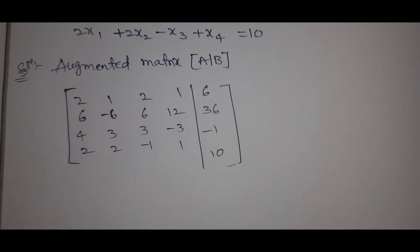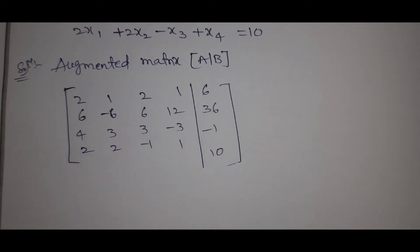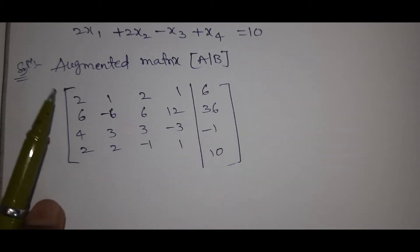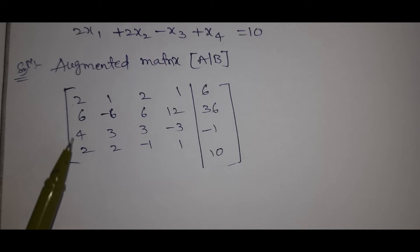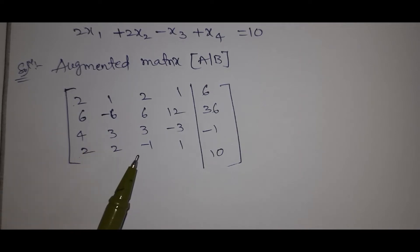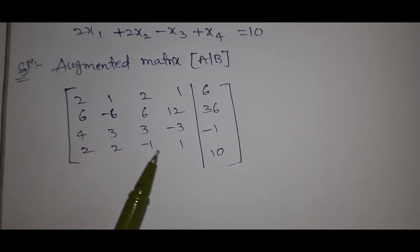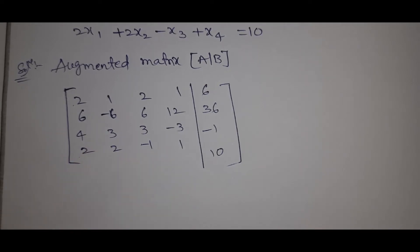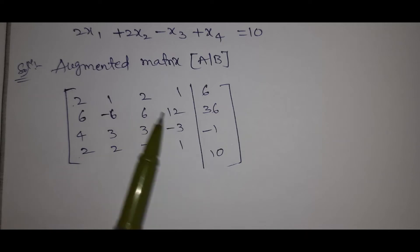Now, what we have to do: the first element needs to be 1. Below the first element, the values must become 0. Let us check the matrix.